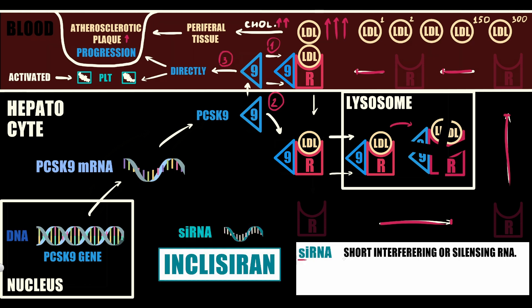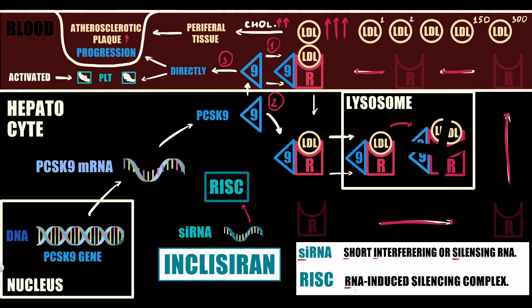Inclisiran is a short-interfering RNA that binds intracellularly to an RNA-induced silencing complex, or RISC. RISC, in its turn, cleaves the messenger RNA molecules encoding PCSK9, specifically degrading the mRNA to prevent PCSK9 protein synthesis in the liver. Notably, one Inclisiran-RISC complex can degrade multiple PCSK9 messenger RNAs. Without PCSK9 mRNA, PCSK9 protein does not build up, and as a result, the amount of PCSK9 decreases.